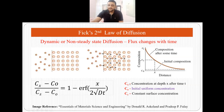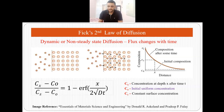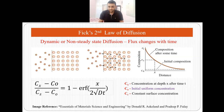Here Cx is the concentration at depth x after time t — that is, what is the concentration of the diffusing species at depth x when we allow t amount of time to pass. C0 is the initial uniform concentration, and Cs is the constant surface concentration because the surface will remain constant. This is Fick's second law of diffusion for non-steady state diffusion.